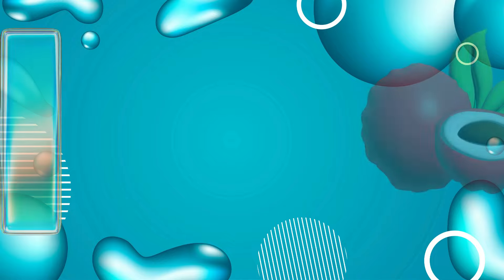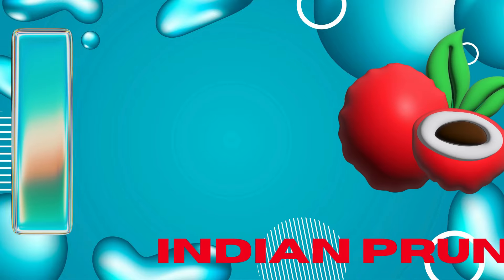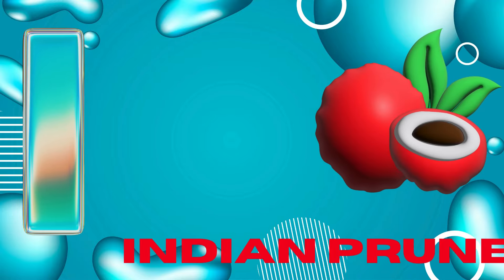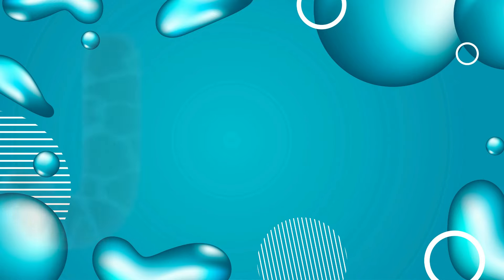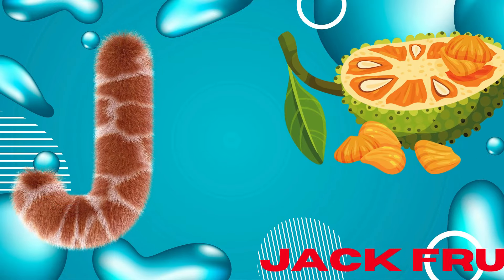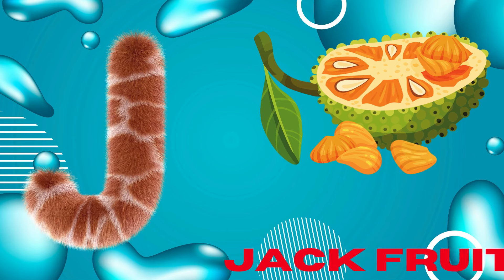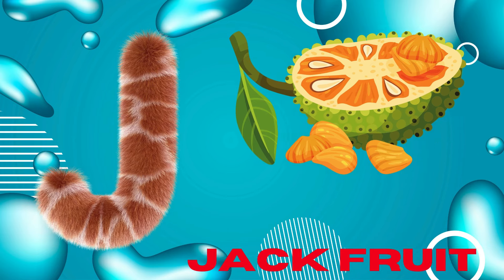I is for Indian prune, i-i-Indian prune. J is for jackfruit, j-j-jackfruit.